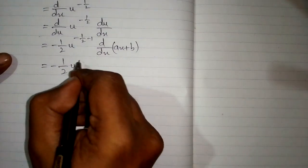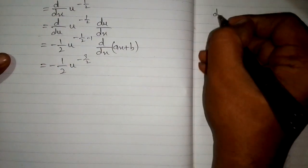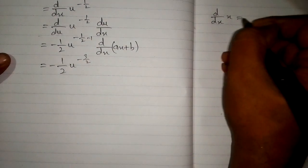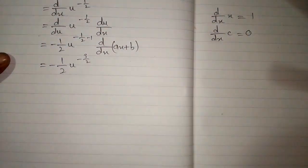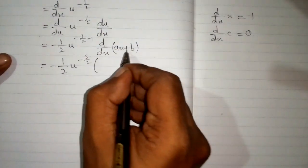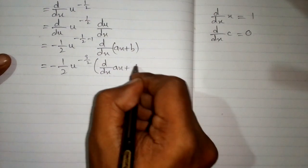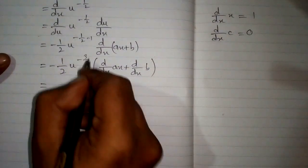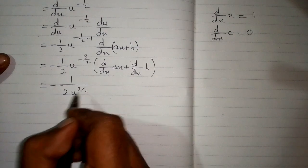This will become minus 1 upon 2 times u raised to the power minus 3 upon 2. And here we know that the derivative of x is 1 and the derivative of any constant is 0. We will apply d by dx of ax plus d by dx of b. And this can be written as minus 1 upon 2 times u raised to the power 3 upon 2.